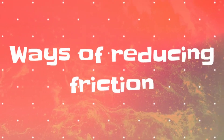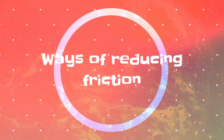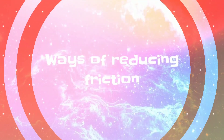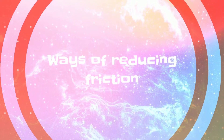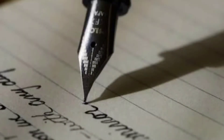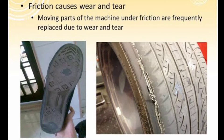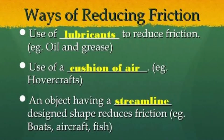Let us understand how friction can be reduced. Although friction is useful in many ways, it causes wear and tear of an object which is not desirable as it reduces its life. So it is desirable to minimize it in certain applications. Let us see one by one.